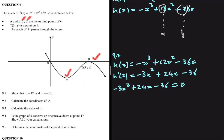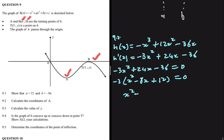We have minus 3x squared plus 24x minus 36 equals zero. Taking minus 3 as a common factor, we get minus 3 times (x squared minus 8x plus 12) equals zero. Dividing both sides by minus 3, we get x squared minus 8x plus 12 equals zero.